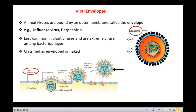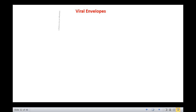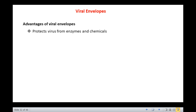The envelope, being host-derived, is biologically a phospholipid bilayer. Since the membrane exhibits flexibility, the enveloped viruses are also called pleomorphic. The envelope imparts a few advantages to the viruses: firstly, it protects the virus from enzymes and chemicals; secondly, it helps the virus to enter inside the host cell.